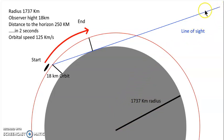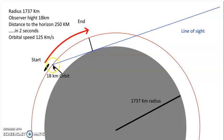With the moon radius established and our line of sight, we see the spacecraft pop up from the horizon and reach its maximum height in less than two seconds. The curvature calculator shows that the horizontal distance covered — the blue line segment — is 250 kilometers.